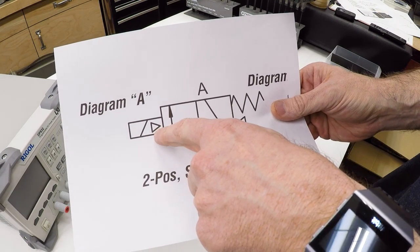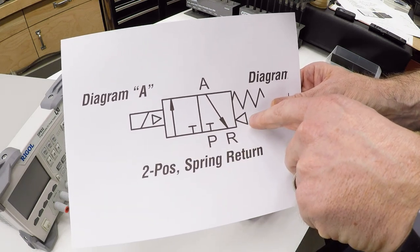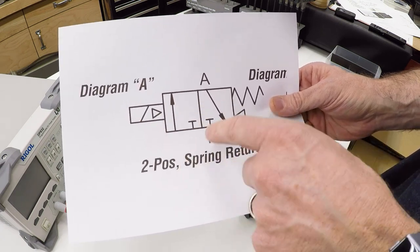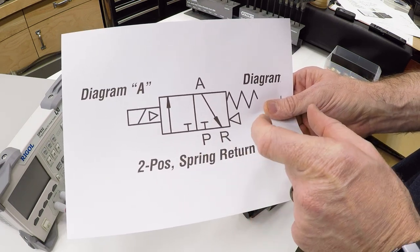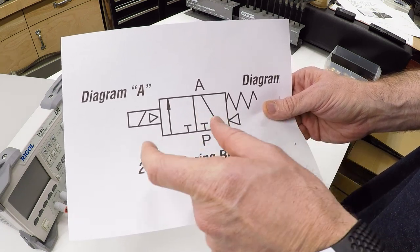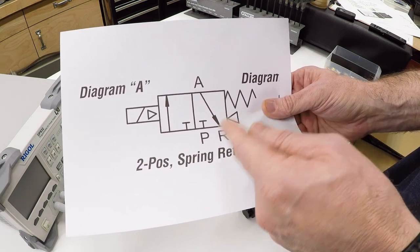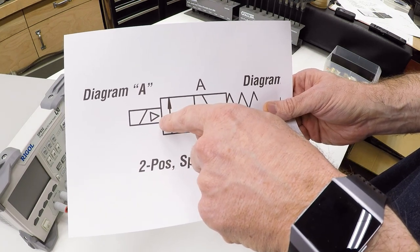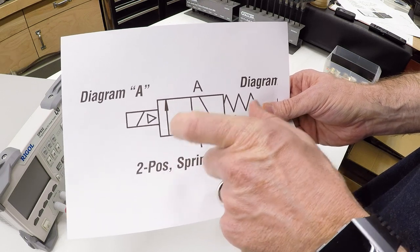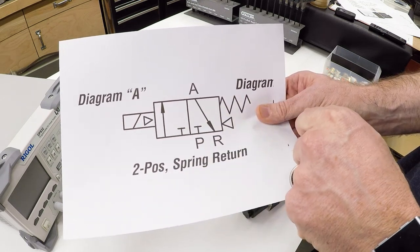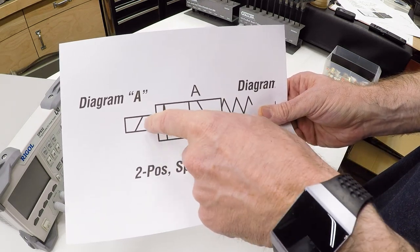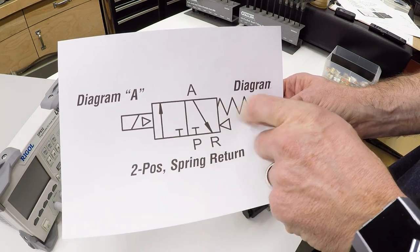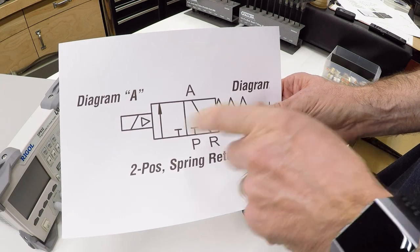One other thing on these diagrams, you'll see these little arrows here. Those indicate that it's a pilot valve. What that means is that the electromagnet is not providing all of the force to throw the shuttle in the valve back and forth. It's also using air pressure to help. So the solenoid is actually just opening up a small valve that then allows air pressure to throw the large valve to the opposite position.